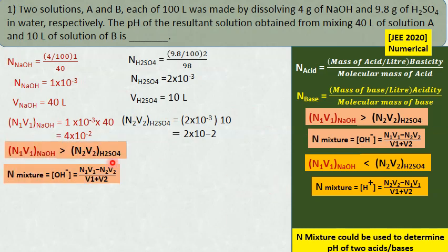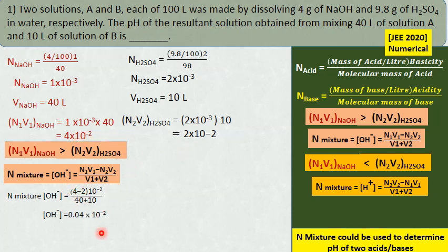Here N1V1 of NaOH is more than that of sulfuric acid. So normality of hydroxyl ion equals (4×10⁻² minus 2×10⁻²) divided by total volume. That comes to 0.04×10⁻² = 4×10⁻⁴ as the concentration of hydroxyl ion.